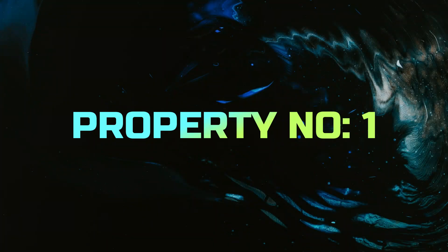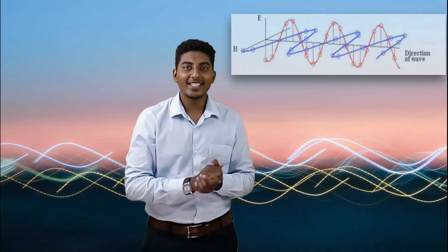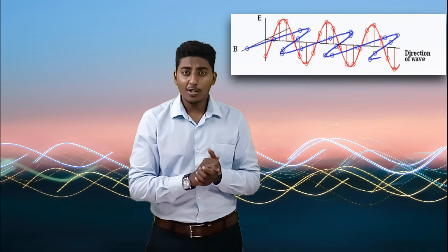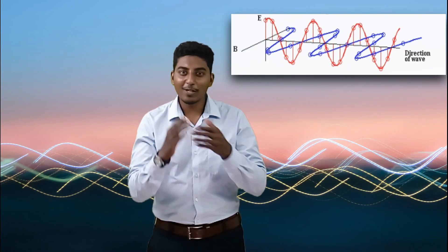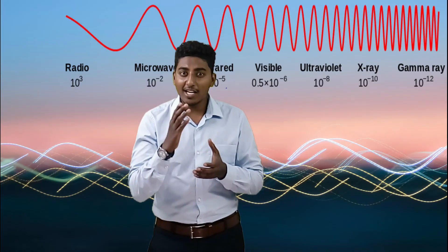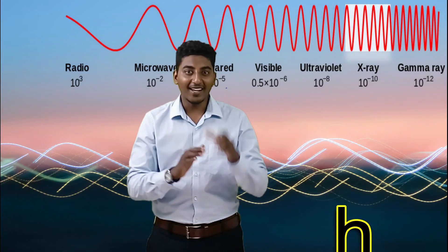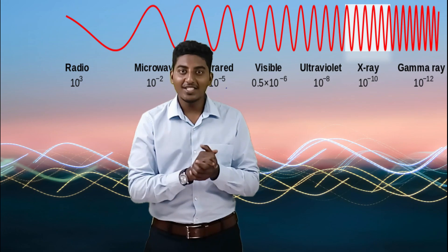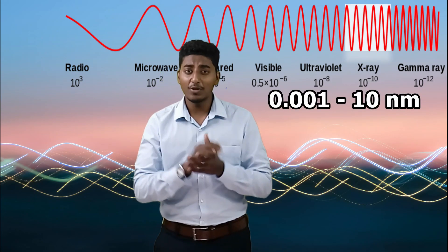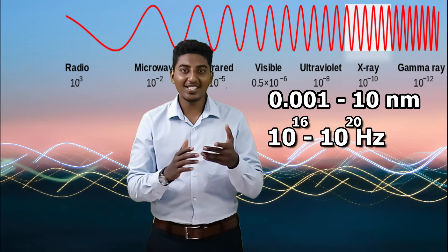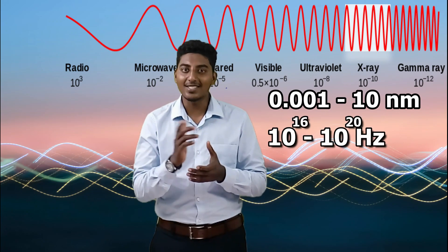Now we will move on to the properties of x-rays. Property number 1: X-rays are a part of the electromagnetic radiation spectrum, with a coupled wave of electric and magnetic field which oscillates perpendicularly to each other. X-rays have an extremely short wavelength and higher frequency — a wavelength ranging from 0.01 to 10 nanometers and a frequency ranging from 10 to the power of 16 to 10 to the power of 20 hertz.